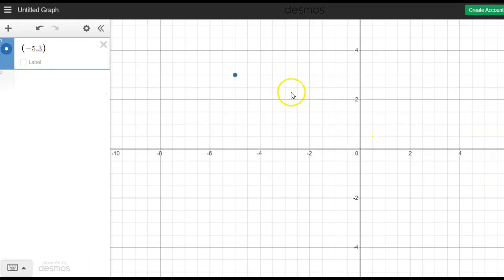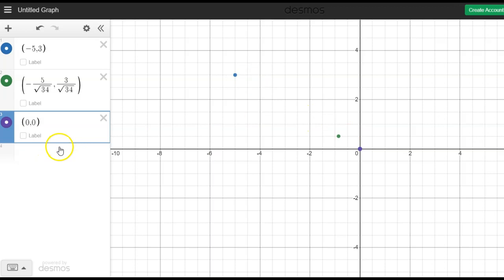All right, I got Desmos now. This is the point, this is where the vector would end. So you see that vector there ending at that point. And now what I'm going to do is I'm going to divide this by the square root of 34, both components. And now that, remember this is where the new vector would end. All right, now you see with the origin, if I put the origin in there, they're all collinear, meaning they're all in the same line.